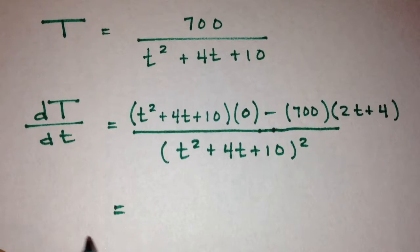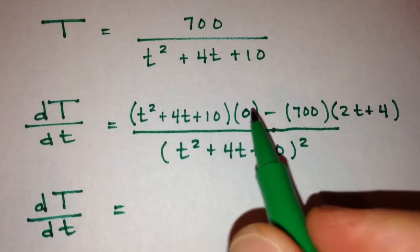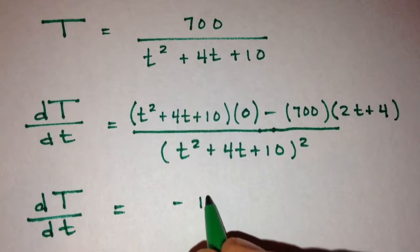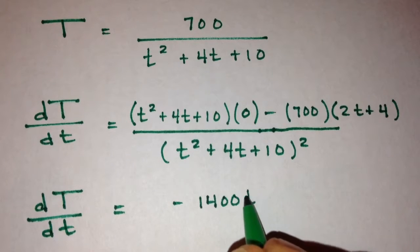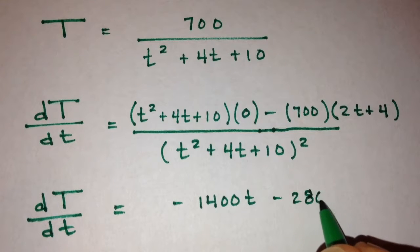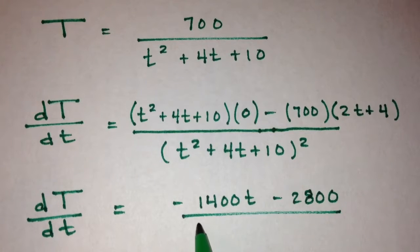When we simplify, we get that the rate of change of the refrigerator temperature over time is going to be equal to negative 1,400t minus 2,800, all over t squared plus 4t plus 10 squared.